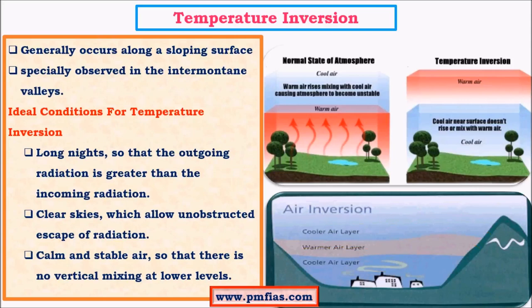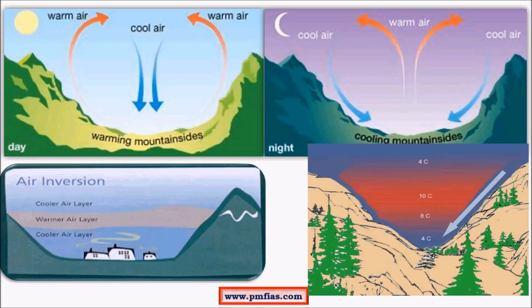Now we'll see how long nights, clear skies, and calm air aid in temperature inversion. Temperature inversion is closely related to the phenomena of mountain breeze and valley breeze, except that here the mountain breeze dominates. During daytime, in intermountain valleys, air moves towards the mountain slopes because of the vacuum created by warm air rising towards the upper layers.